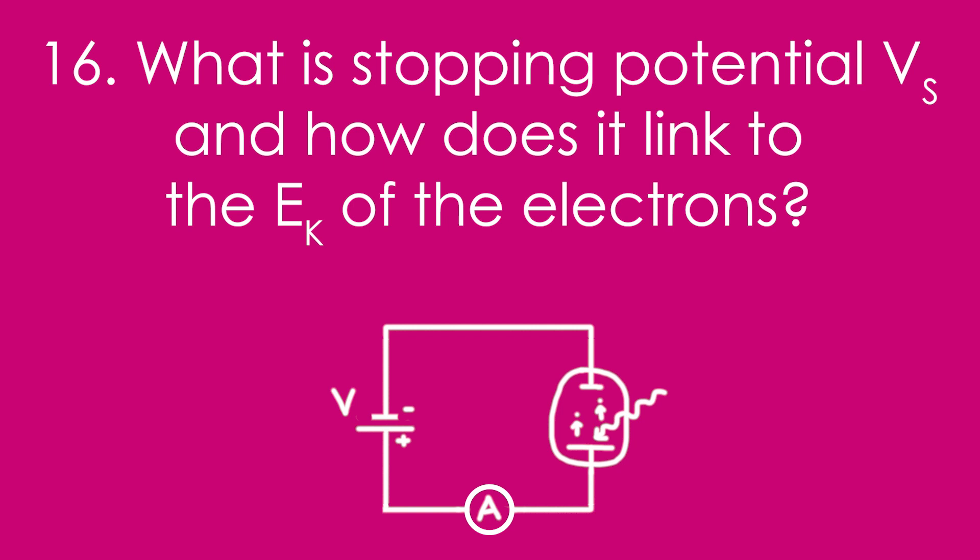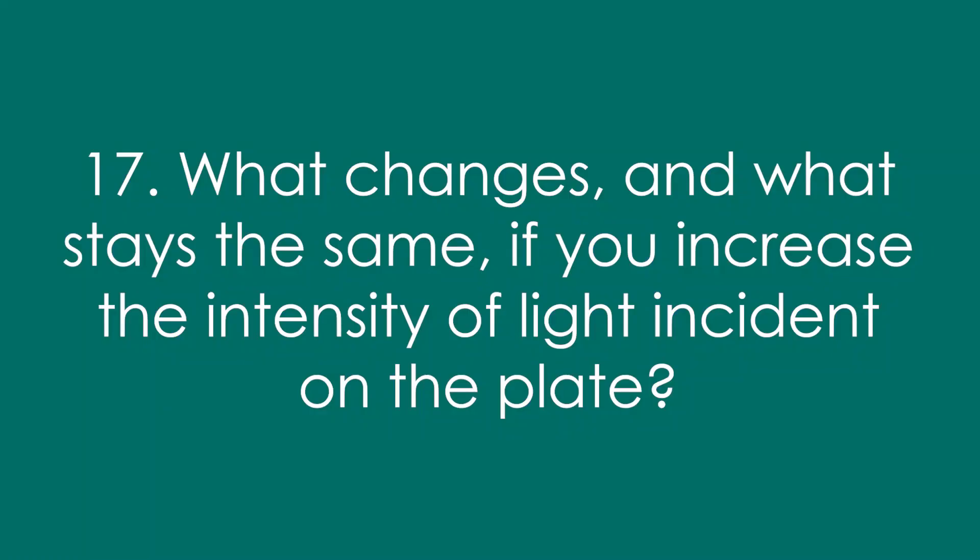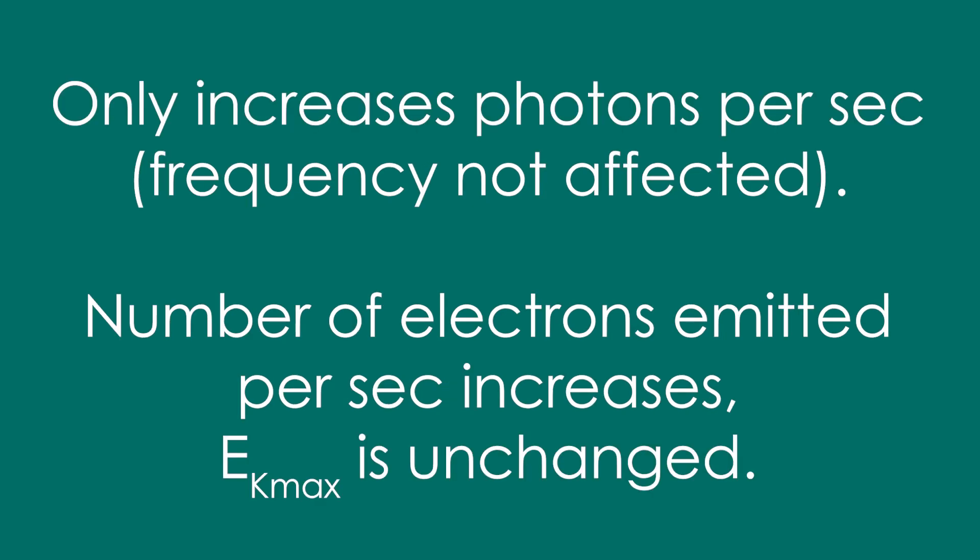Sixteen, in this circuit here, what is stopping potential Vs, and how does it link to the kinetic energy of the electrons? Stopping potential is the minimum PD needed to reduce the current in the circuit to zero — that's when we know we've stopped the electrons crossing the gap. Seventeen, what changes and what stays the same if you increase the intensity of light incident on the plate? This only increases the photons per second incident on the plate and doesn't change the frequency, so the number of electrons emitted per second increases but the Ek max is unchanged.